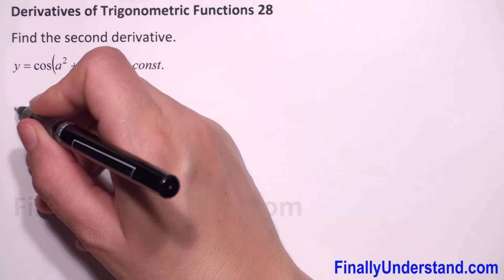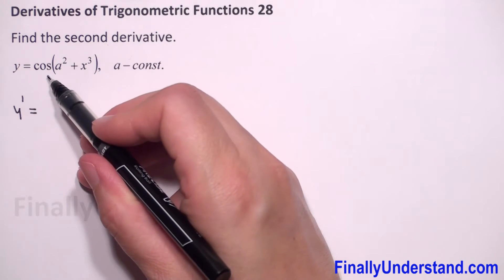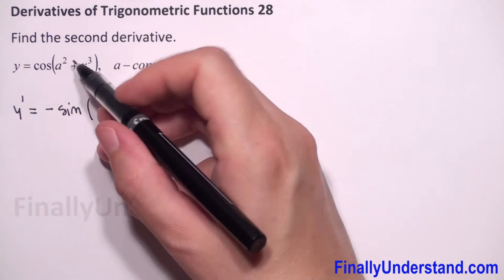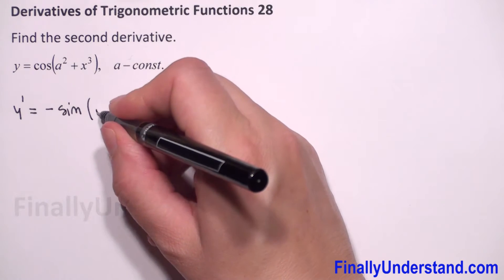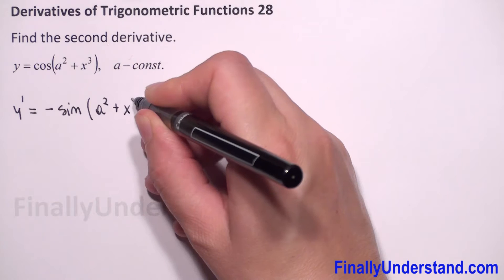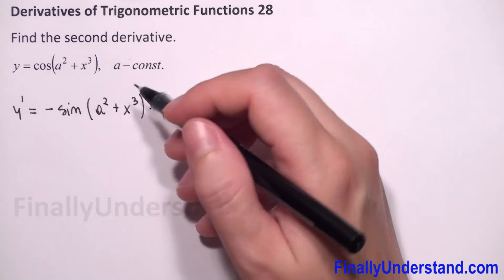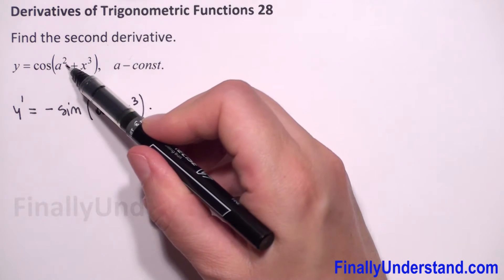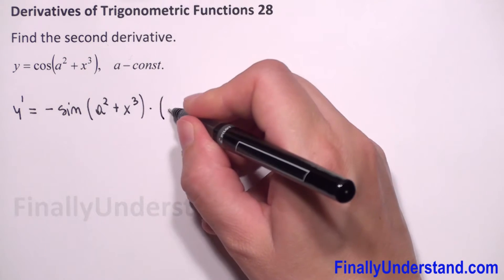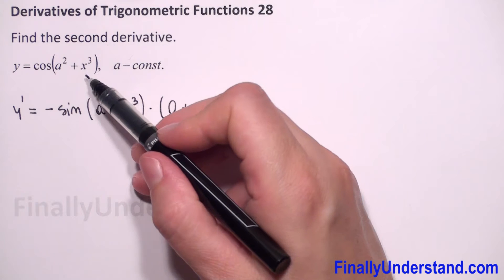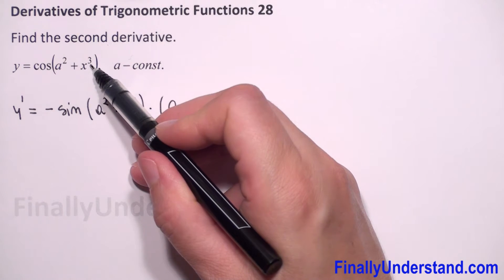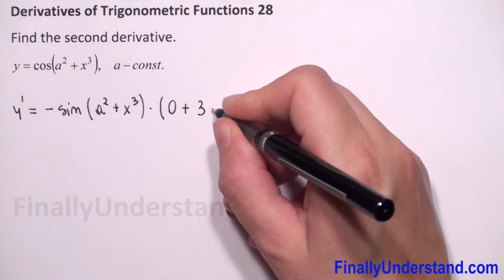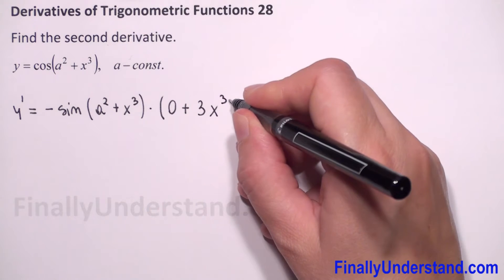So y prime is equal to the derivative of cosine, which is negative sine, and we just copy whatever we have in parenthesis: a squared plus x to the third power. Then we multiply by the derivative of the expression inside the parenthesis. a squared is a constant, so its derivative is zero, plus the derivative of x to the third power — we take down the power, giving us 3 times x to the power 3 minus 1.